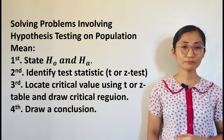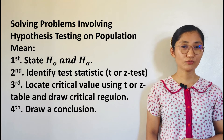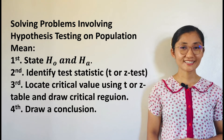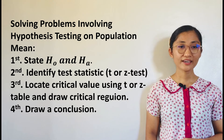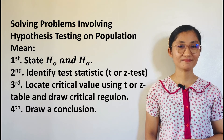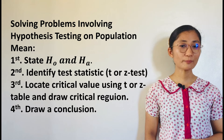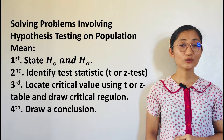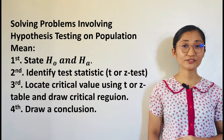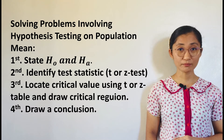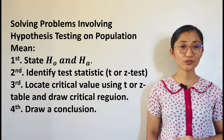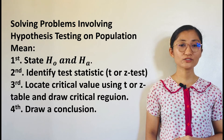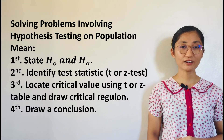Before we have examples, let me present the steps in solving problems involving hypothesis testing on population mean. First step: state the null hypothesis H₀ and the alternative hypothesis Hₐ. Second step: identify the appropriate test statistic to be used, then compute its value. Third step: locate the critical value for the test using either the critical z-value table or the t-table, then draw the critical region corresponding to the critical value. Fourth step: draw a conclusion based on the computed test statistic value and the critical value of the test.